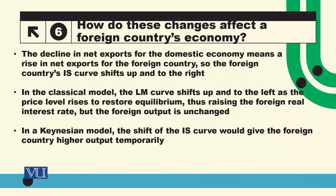Now we examine how these changes affect the foreign country's economy. The decline in net exports for the domestic economy means a rise in net exports for the foreign trading partner. The foreign country's IS curve shifts up and to the right. In the classical model, the LM curve then shifts up and to the left as the price level rises to restore equilibrium, raising the foreign real interest rate while foreign output remains unchanged.